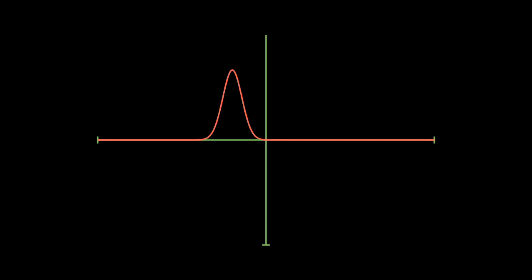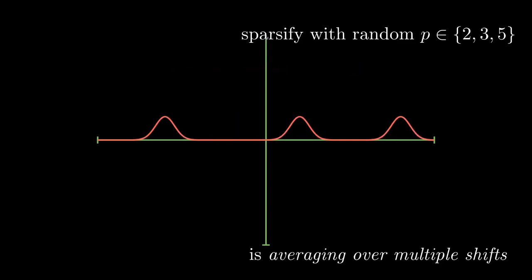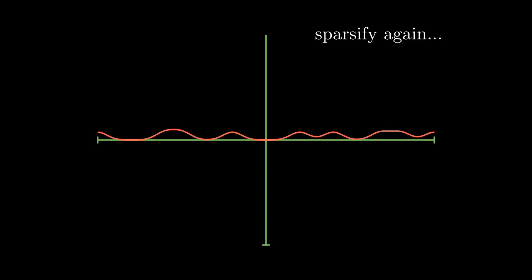On the Arakelov class group, the torus here, sparsification has the effect of shifting the distribution by a specific shift. In our random walk we will sparsify with primes and each prime has a specific shift. The primes 2, 3 and 5 have for example these shifts. Sparsifying by a randomly chosen prime among those three results in a sort of average over all shifts, like this. And if you apply this again, this yields the uniform distribution or something close.